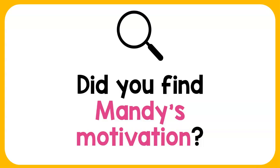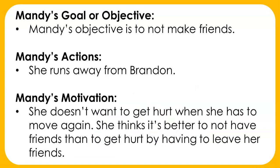All right, let's see how you did with finding Mandy's motivation. What was her goal? Mandy's objective or goal is to not make friends. Her actions — she runs away from Brandon. So what motivated her to do this? Why doesn't she want friends? Well, she doesn't want to get hurt when she has to move again. She thinks it's better to not have friends than to get hurt by having to leave her friends. So that is her motivation.